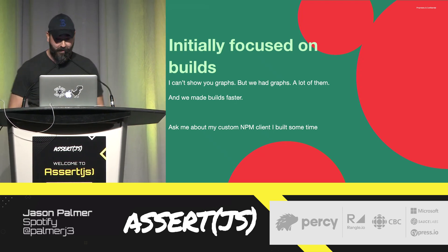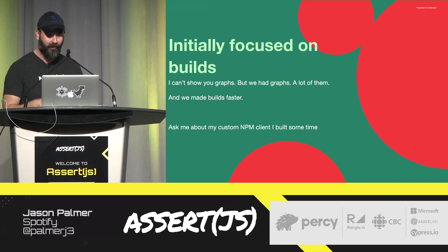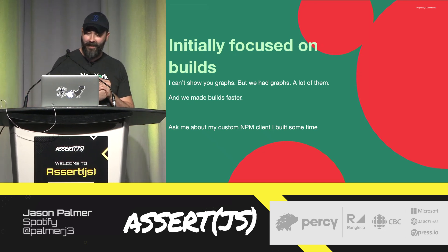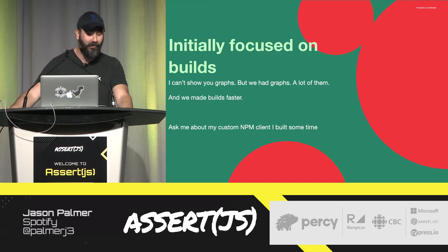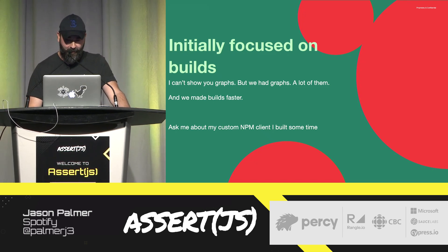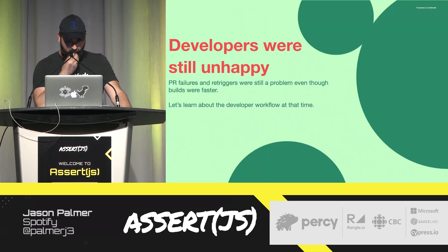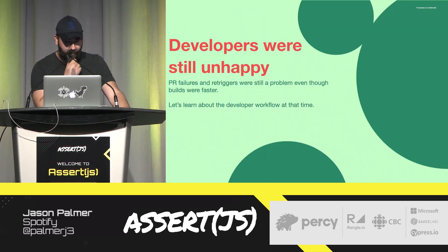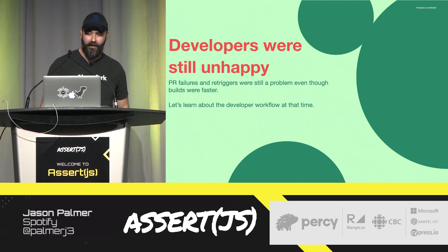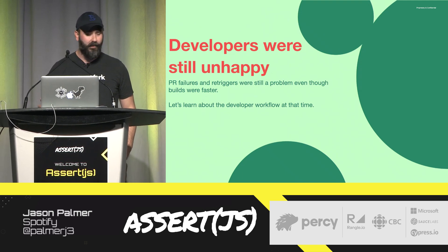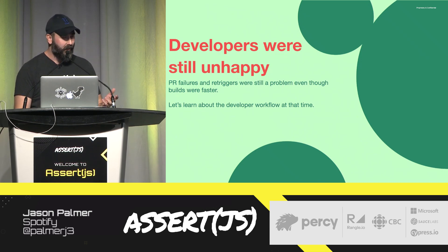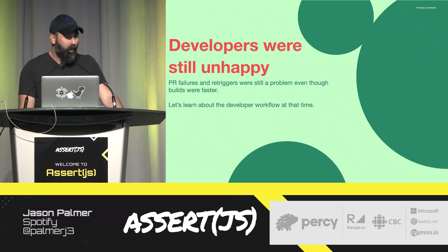During this time I actually wrote an NPM client I called Ziploc internally and planned on open sourcing it, but then NPM and Yarn came out with lock file support and it was way better than what I wrote. Developers were still unhappy though — we had improved build times by something like 20 or 30 percent, but PRs were still failing. People would submit pull requests and they would just fail randomly. So we quickly realized we needed to focus on why these builds were failing.